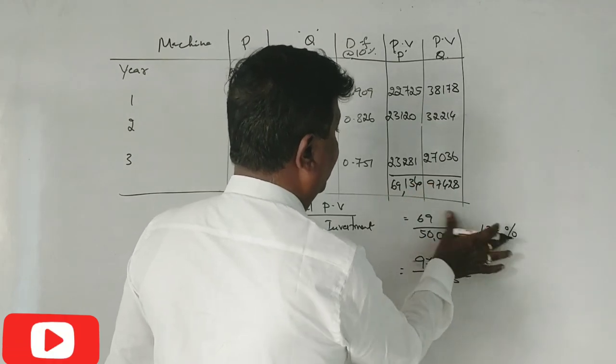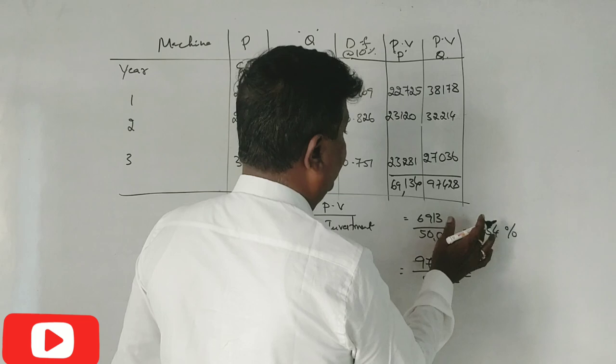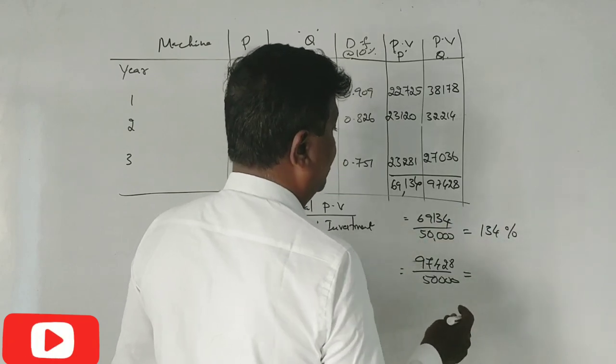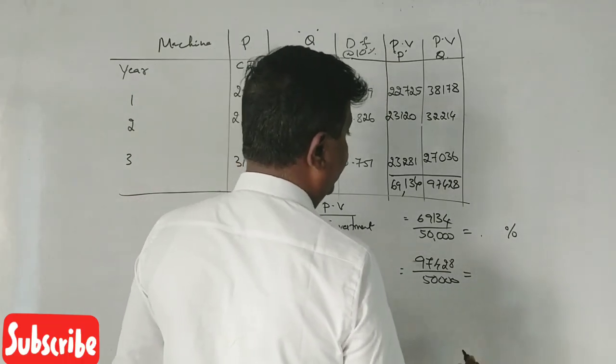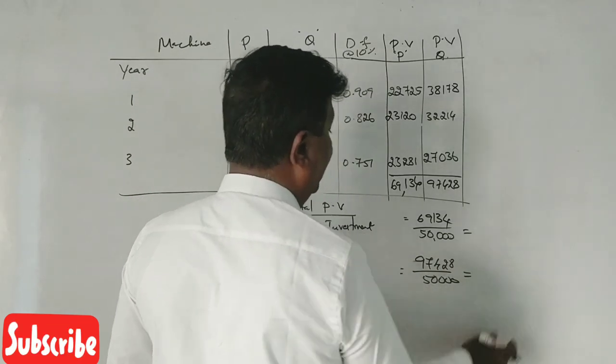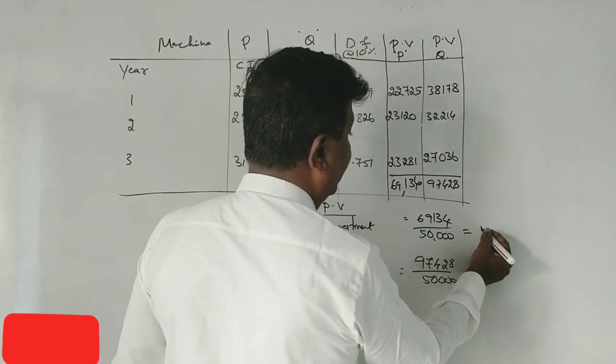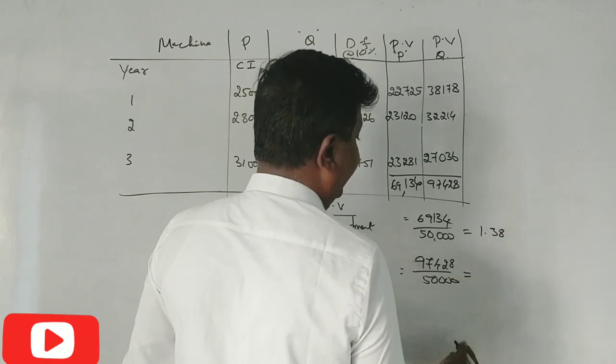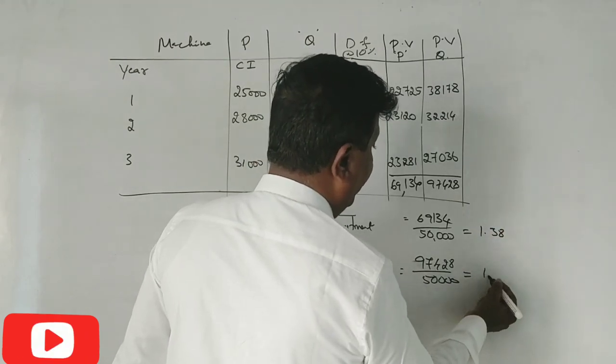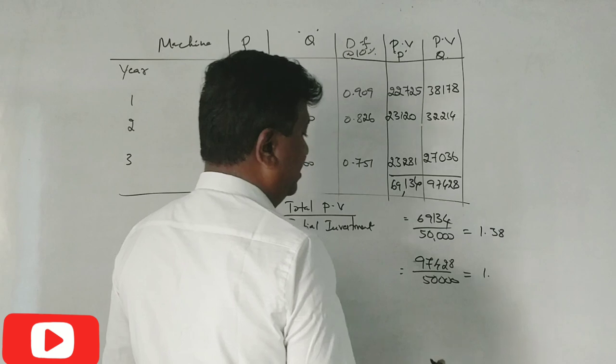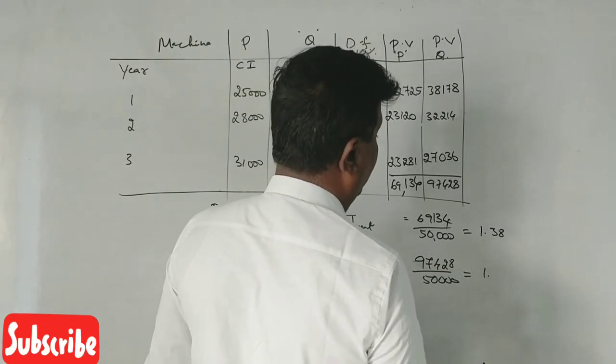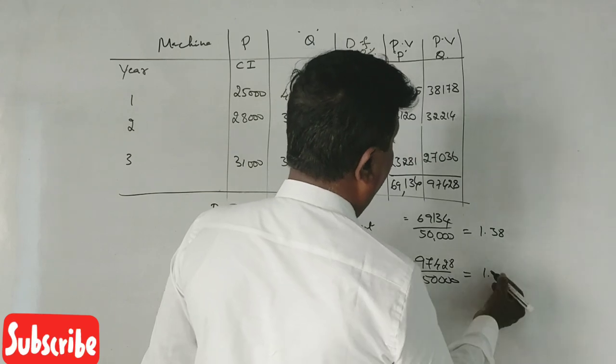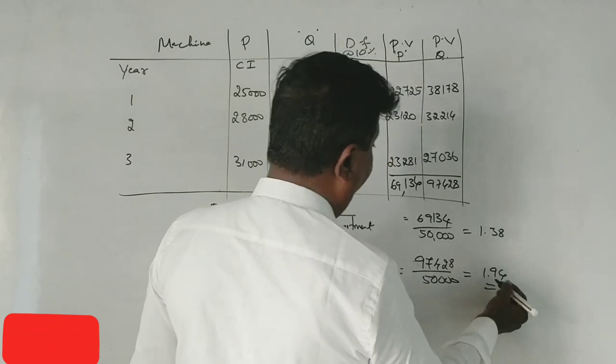69,134. Percentage? Okay, 1.38. 1.38. 1.94. 9, 4? Yes, sir.